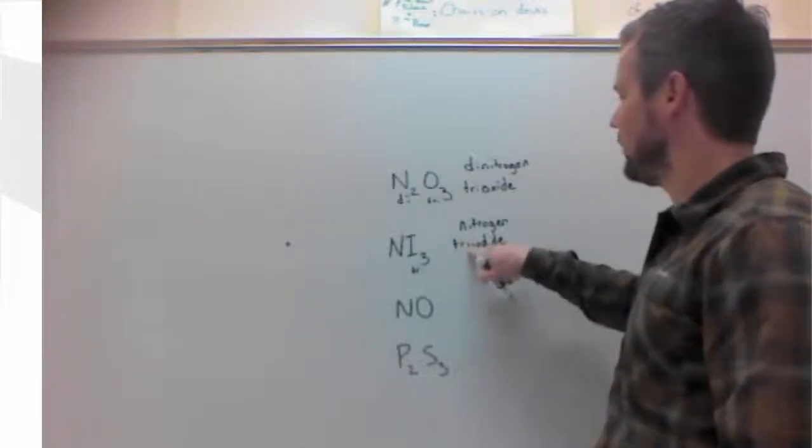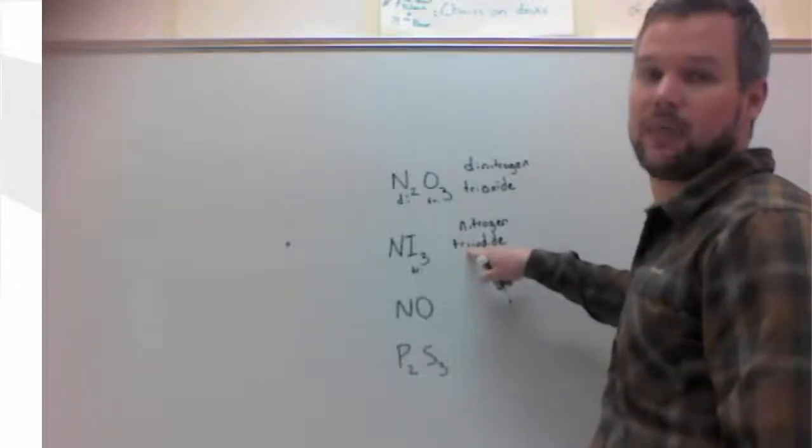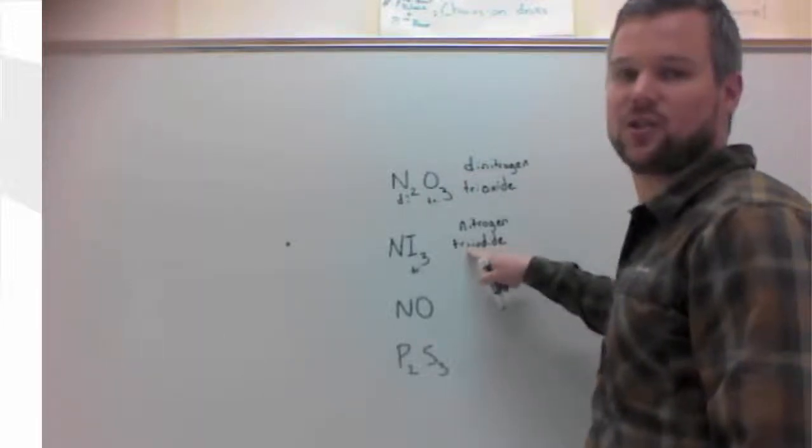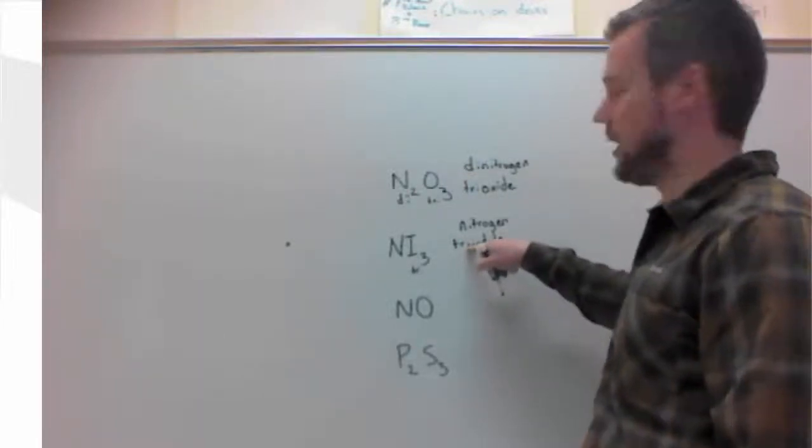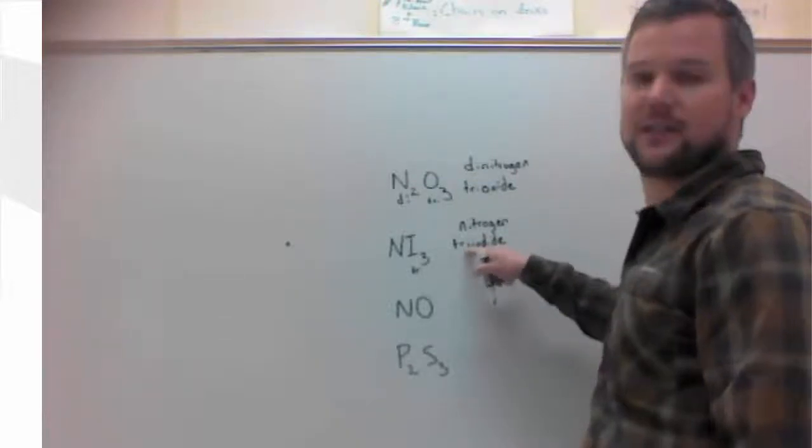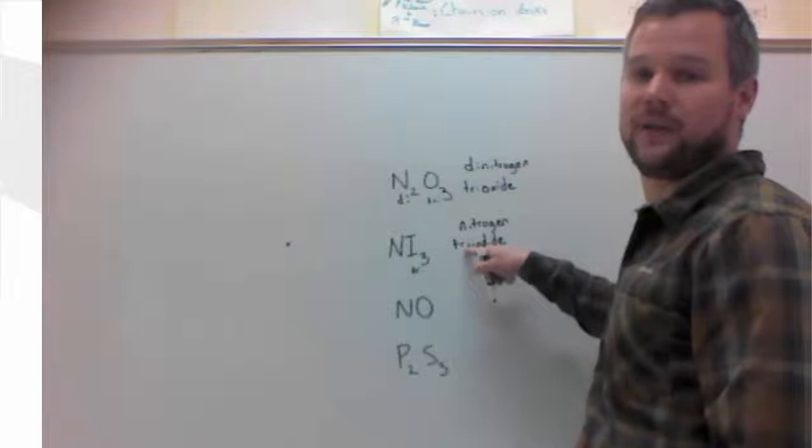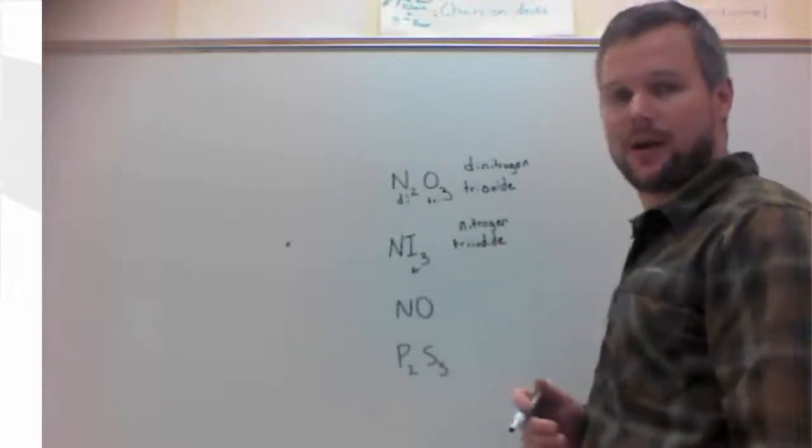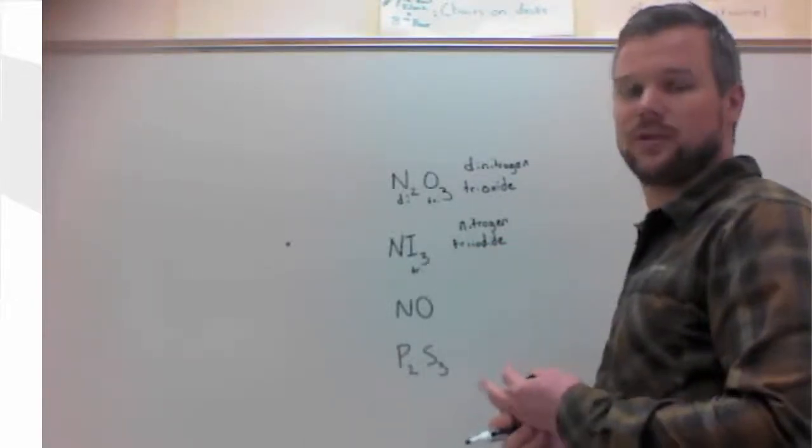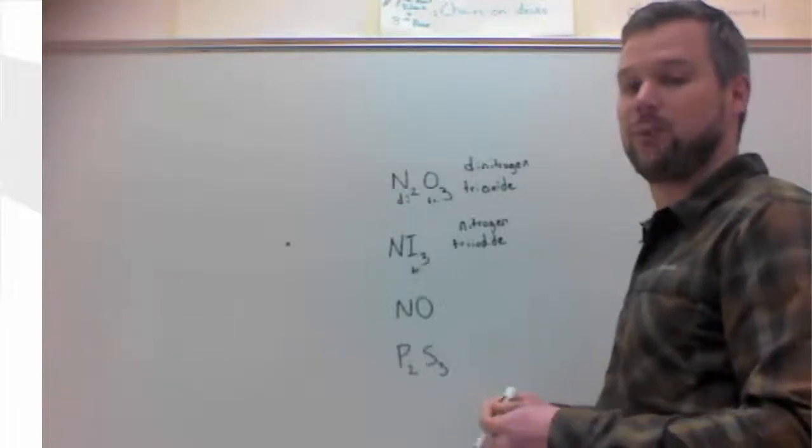Notice this is a case where we keep the double I's. It doesn't turn to tri-iodide. Sometimes we drop the prefix's vowel if it's a double vowel start. Not always, though. So if you happen to incorrectly put two vowels in a row, I won't take off points.